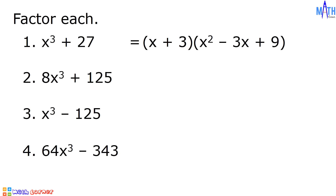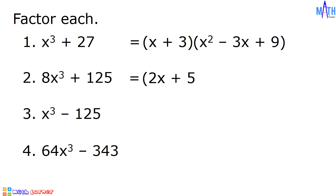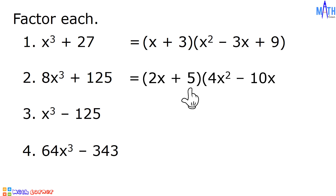For Number 2, we have 8x cubed plus 125. For the binomial factor, the cube root of 8x cubed is equal to 2x, since 2x times 2x times 2x is equal to 8x cubed. The cube root of 125 is equal to 5. The opposite of 2x times 5 is negative 10x. And 5 times 5 is equal to 25. So 8x cubed plus 125 is equal to quantity 2x plus 5 times quantity 4x squared minus 10x plus 25.